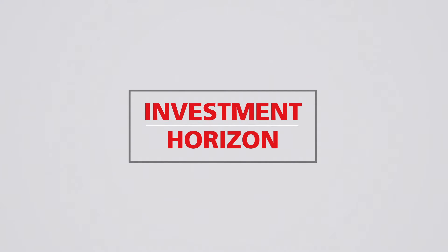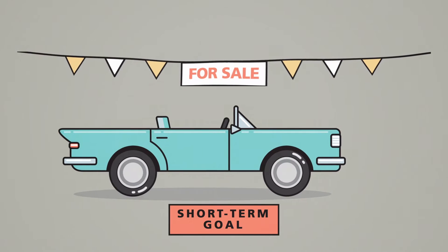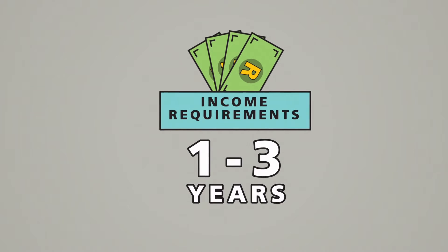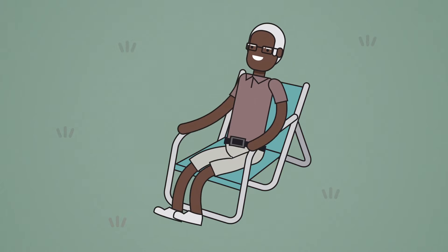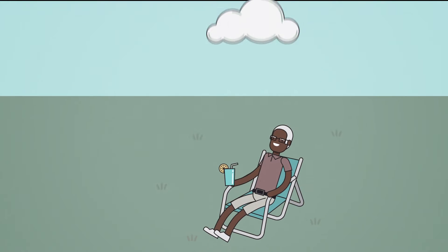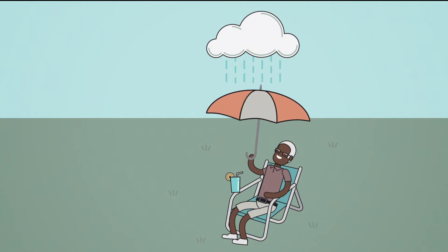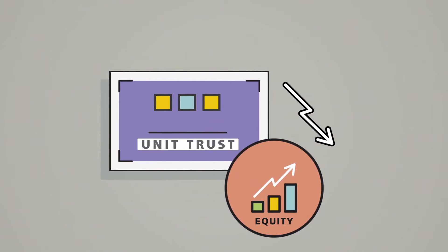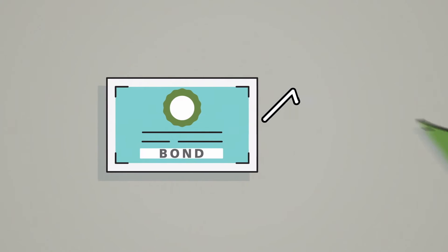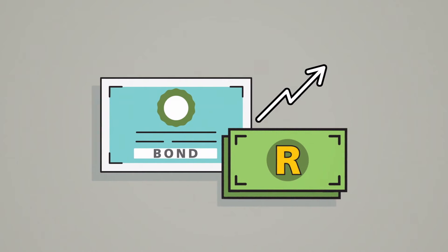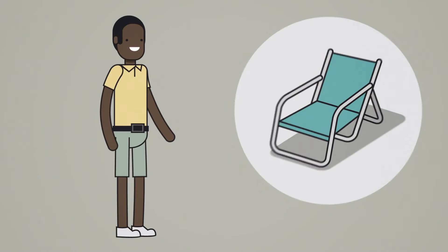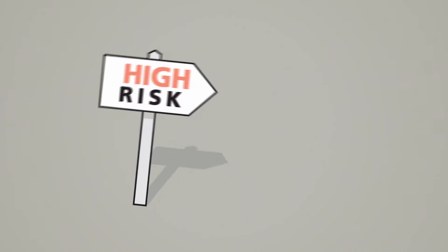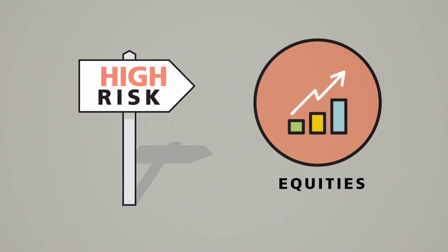Investment horizon. If you are saving toward a short-term goal, have income requirements over the next one to three years, or are about to retire in less than five years, you can't afford to take too much risk. In this case, a unit trust with a lower degree of equity exposure and higher holding of bonds and/or cash is appropriate for you. If you are younger and are saving for the long term, then you can afford to take on more risk in the form of equities.